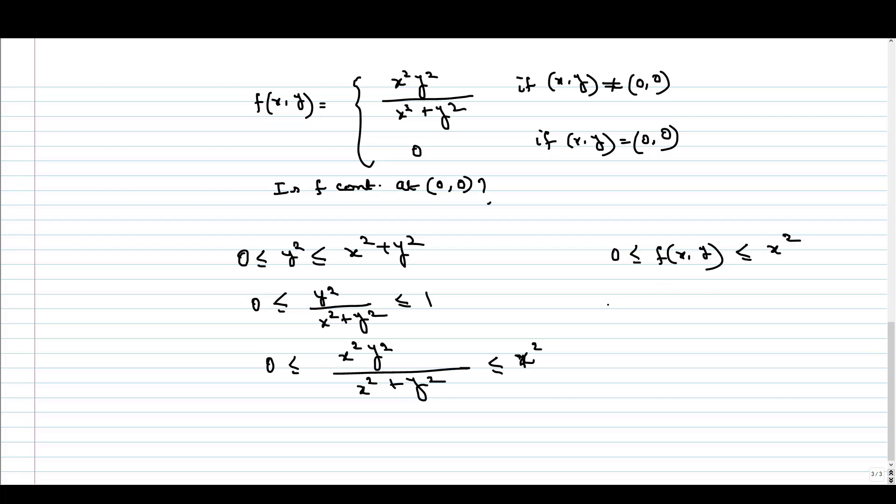Now we can use the sandwich theorem here. I am taking (x, y) tending to origin, so this is constant function 0, and this is the limit which we want to calculate: limit of (x, y) tending to (0, 0) of f, which is less than or equal to limit of (x, y) tending to (0, 0) of x².